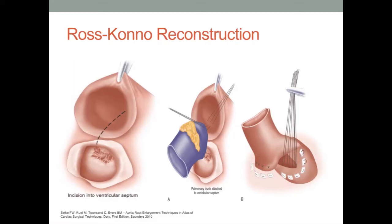Hypoplasia of the left ventricular outflow tract and concomitant pathology of the aortic valve can be addressed successfully by combining the aortoventriculoplasty with pulmonary autograft replacement of the aortic valve. Harvesting of the pulmonary autograft is accomplished by carefully dissecting the pulmonary artery off the aorta and transecting the pulmonary artery to ensure appropriate anatomic visualization of the pulmonary valve leaflets. A small right-angle clamp may be passed well below the pulmonary valve annulus and gently pushed through the right ventricle anteriorly, after which the right ventricle is divided well below the annulus with direct visualization of the pulmonary valve leaflets.